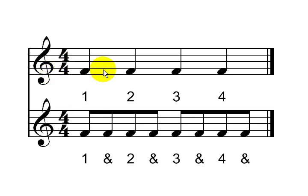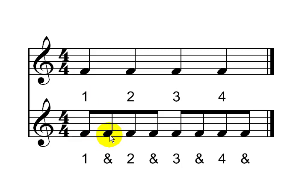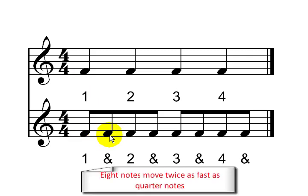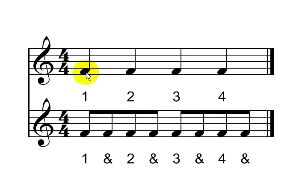Finally, let's compare the quarter notes to the 8th notes. Now each quarter note takes one beat: 1, 2, 3, 4. And the time it takes one quarter note to play is the time for two 8th notes to play, so they move twice as fast as the quarter notes. Let's take a listen to this example. Let's listen one more time and try counting along. Ready? Let's go. 1, 2, 3, 4.